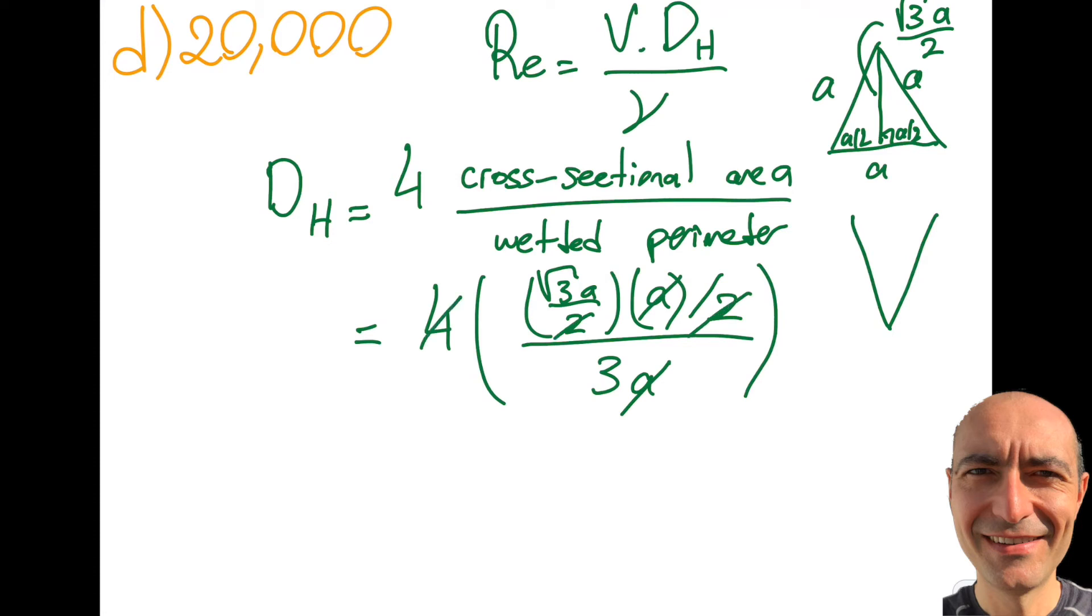The a's will cancel, the fours will cancel. I get square root of three a by three. I can do a little bit better because this is square root of three times square root of three, so I get one of them canceling, giving me a by square root of three. That would be my hydraulic diameter. You can see it is quite different than 10 centimeters versus 10 centimeters divided by square root of three.